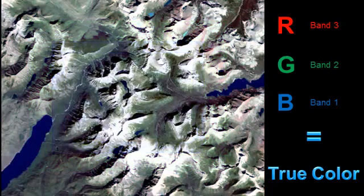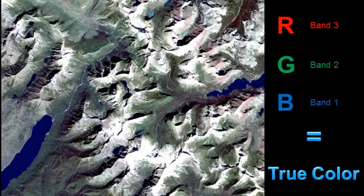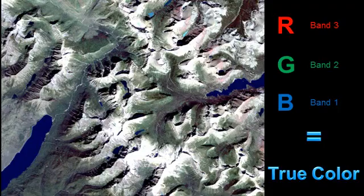A true color composite approximates the range of human vision, so these images appear close to what we would expect to see in a normal photograph. True color images tend to be low in contrast and somewhat hazy in appearance, because blue light is more susceptible than other bandwidths to scatter by the atmosphere. Broad-based analysis of underwater features and land cover are representative applications for true color composites.